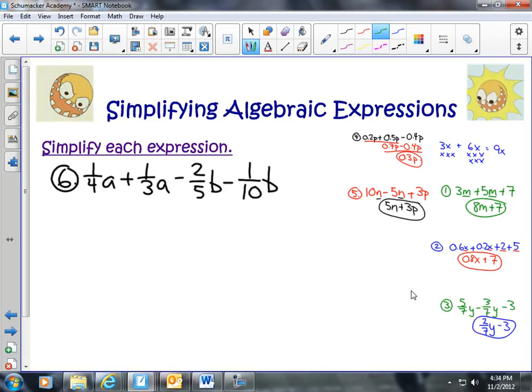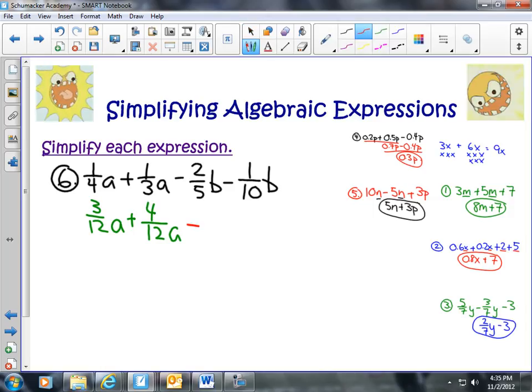So for the 1 4th and 1 3rd, we can make this 12ths. So I did 4 times 3 is 12, so 1 times 3 is 3 12ths. Plus, again, this is going to be 12ths a. 3 times 4 is 12, therefore 1 times 4 is 12. Then I'm going to have minus. Well, with the 5ths and 10ths, we can make it a 10th as our common denominator. So 5 times 2 is 10, therefore 2 times 2 is 4. So we have 4 tenths b minus the 1 tenths b.